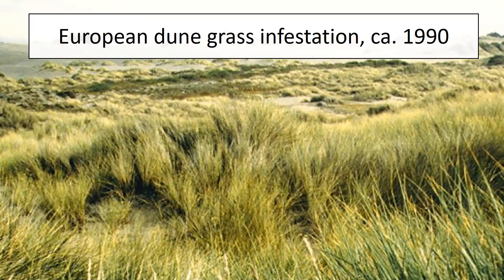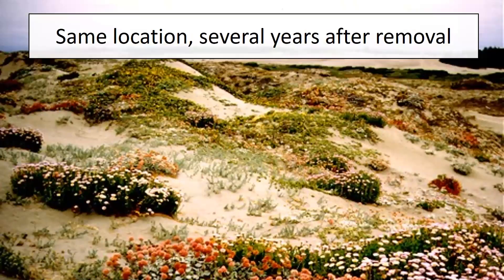Here's a particularly good example of what happens when you actually manage an invasive species. This shows a European dune grass infestation in the 1990s — the area is absolutely covered in dune grass. The managers decided to eradicate it, and the area suddenly just exploded with different species: several different flowers, lots of different scrub plants — a brand new, fully operational ecosystem. You can imagine what happens when you eliminate things like bush honeysuckle from forest understory and this kind of recovery begins.